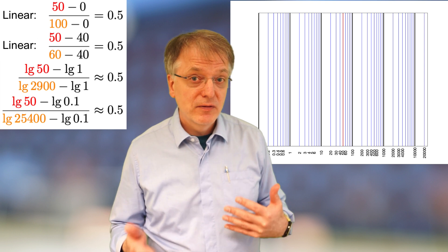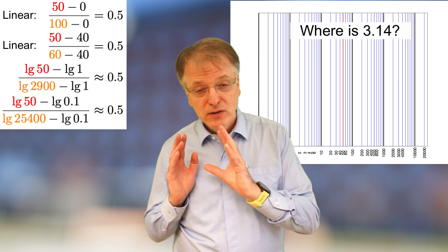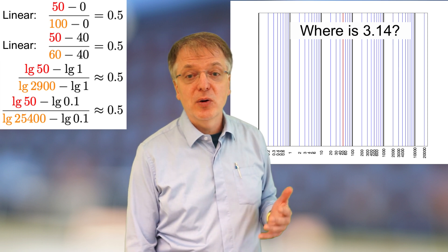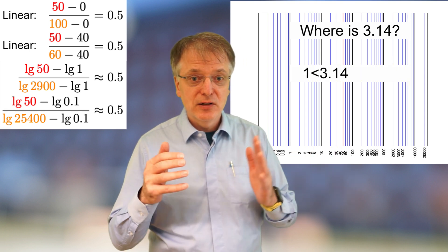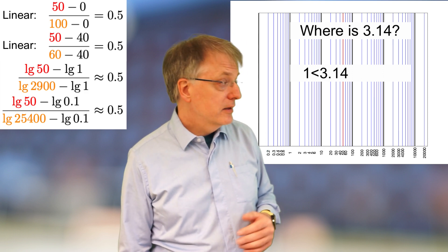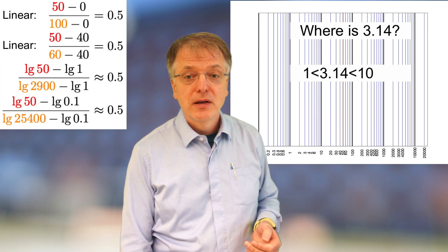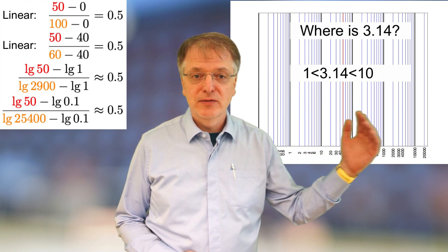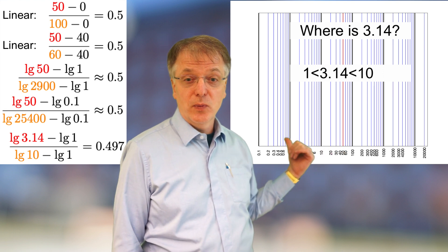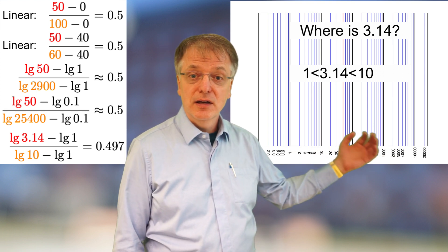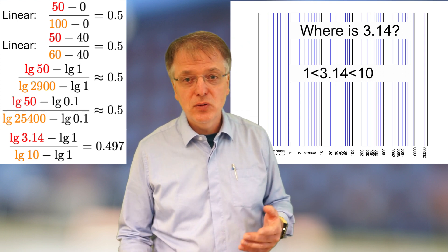So how do you find, for example, 3.14 in a logarithmic diagram with base 10. My recommendation is that you first look for the closest smaller integer power of 10 to compare with. In our case, we have 3.14 and 10 to the power of 0 is 1. So that's the closest smaller integer power of 10. So now we have 1, we have 3.14 and then we have 10. Then you do exactly as we did before. Take the difference between the log 10 of 3.14 and log 10 of 1 and divide that with the difference between log 10 of 10 and log 10 of 1. And we get 49.7%. So 3.14 is almost in the middle of 1 and 10.